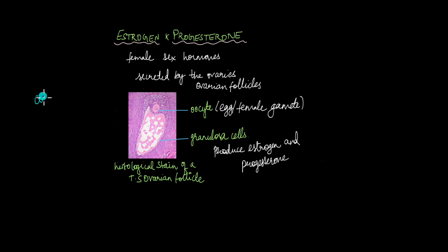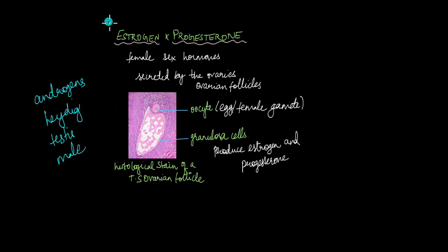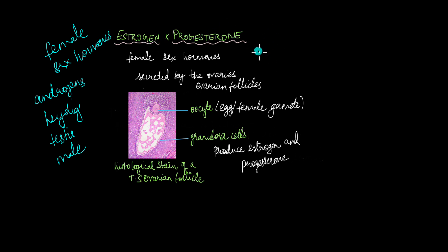In a previous video, we talked about the androgens — the different types of androgens, their structures and their functions, how they were being produced by the Leydig cells in the testes in males. They are the male sex hormones. In this video, we're going to be talking about the female sex hormones, which are estrogen and progesterone. We'll talk about their structure, where they are produced, their functions, and how the production of these hormones — androgens and the female sex hormones — are regulated by other hormones in our body.